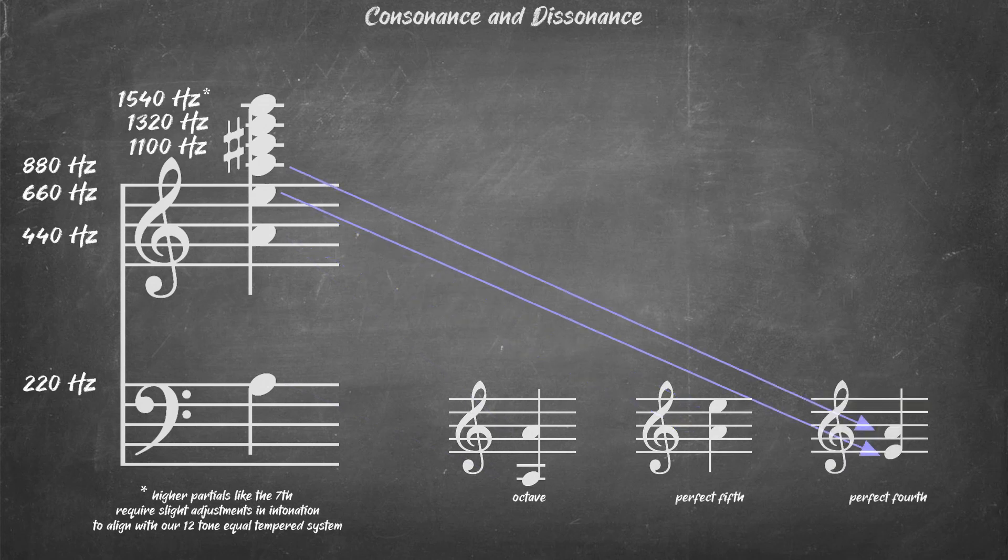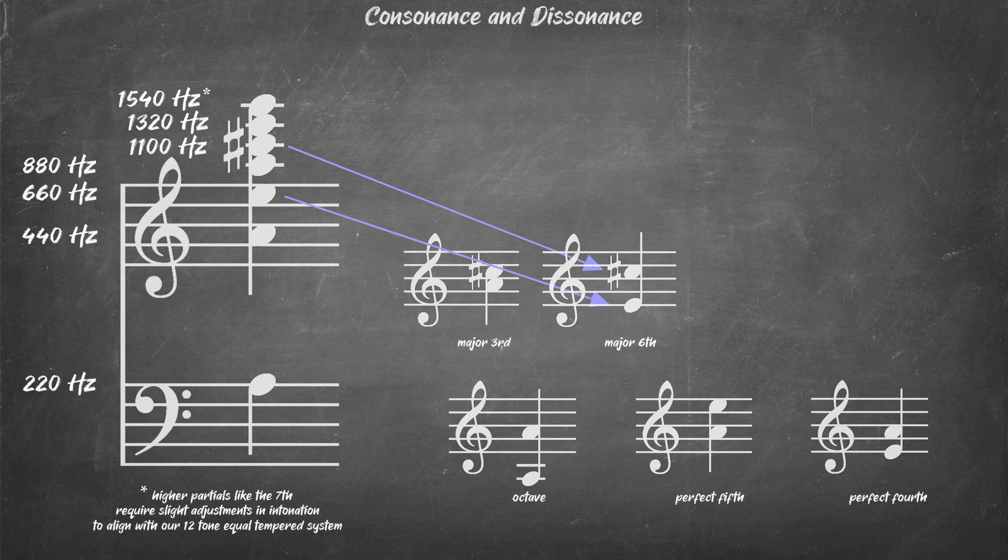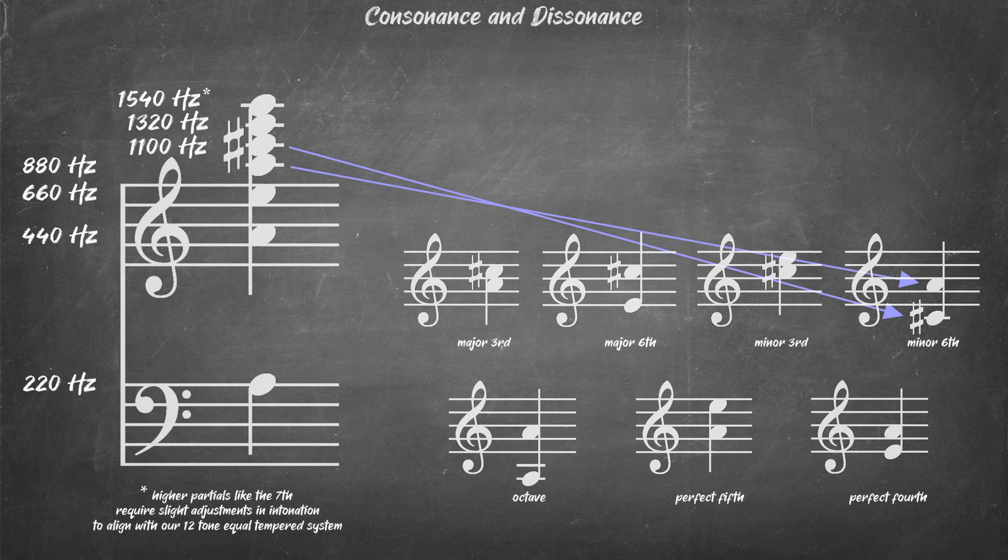Clearly, the octave and a fifth are objectively consonant in this definition of the word, and if you continue to examine the harmonic series, you'll notice that the thirds, both major and minor, have some correlation, and of course the inversion of those intervals, so fourths and sixths as well.